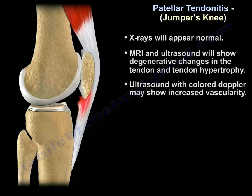We should focus on screening and treating poor quadriceps and hamstring muscle flexibility to prevent patellar tendonitis in athletes. X-rays will appear normal. MRI and ultrasound will show degenerative changes in the tendon and tendon hypertrophy. Ultrasound with colored Doppler may show increased vascularity.